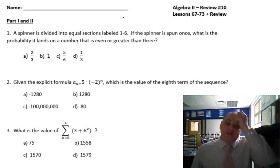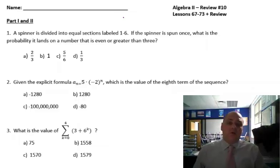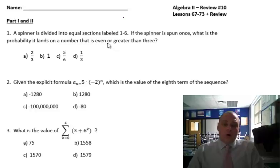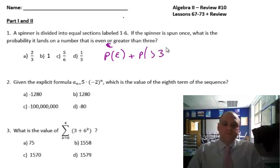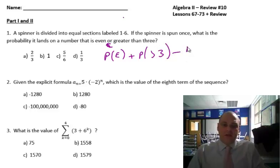A spinner is divided into equal sections labeled 1 to 6. If the spinner is spun once, what is the probability it lands on a number that is even or greater than 3? There's that keyword 'or.' So when we're doing or, it's the probability of event A, which is getting an even number, plus the probability of event B, which is getting a number greater than 3, minus the probability of 'and' — so probability of even and greater than 3.